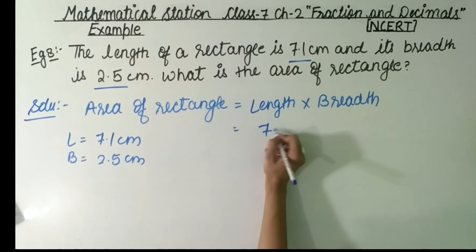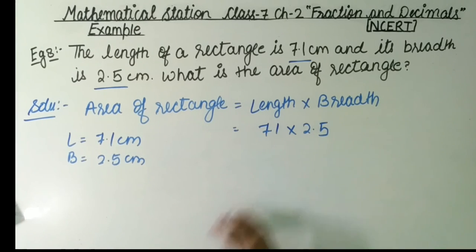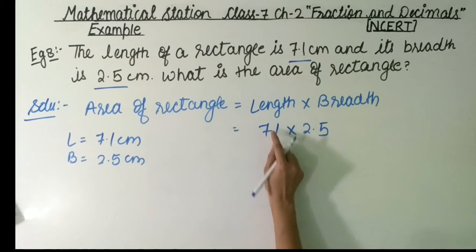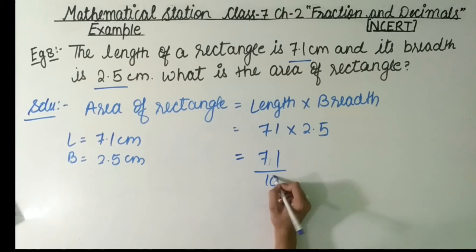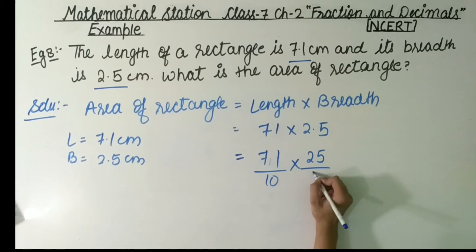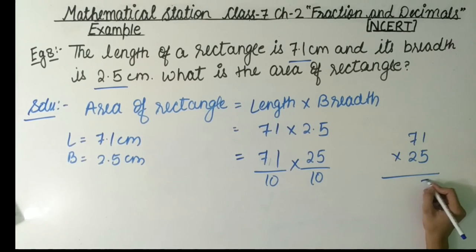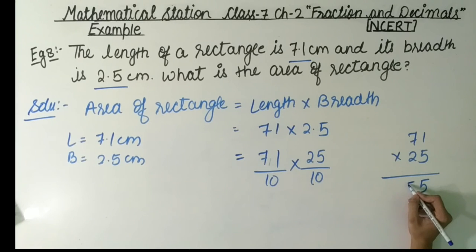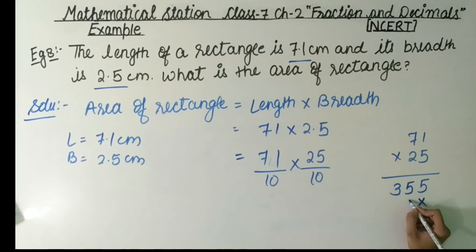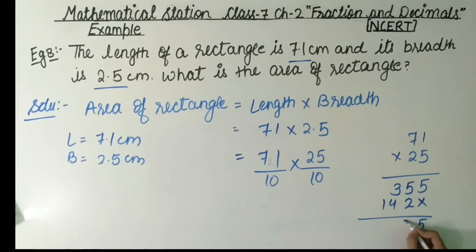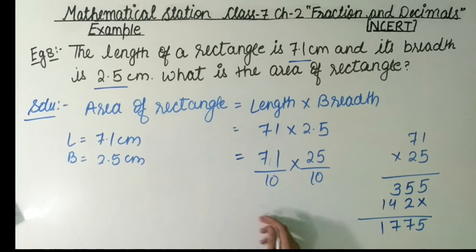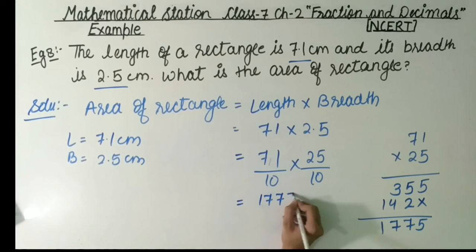The length is 7.1 cm and the breadth is 2.5 cm, so we multiply 7.1 by 2.5. Since both are decimal numbers, we note that each has one decimal place, giving a denominator of 10 each. We multiply 71 by 25: 5 times 1 is 5, 5 times 7 is 35, then 2 times 1 is 2, 2 times 7 is 14 plus carry 2 gives 16. Adding the rows: we get 1,775.